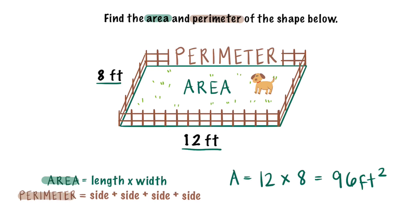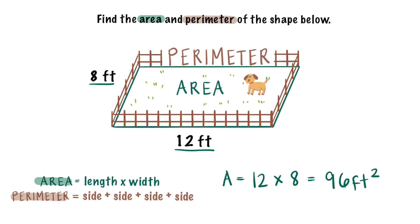Perimeter equals side plus side plus side plus side. P equals 8 feet, which is our first side, plus 12 feet, which is the next side.